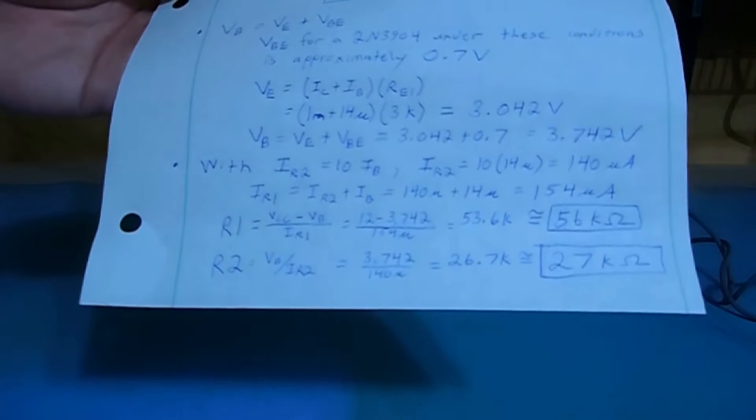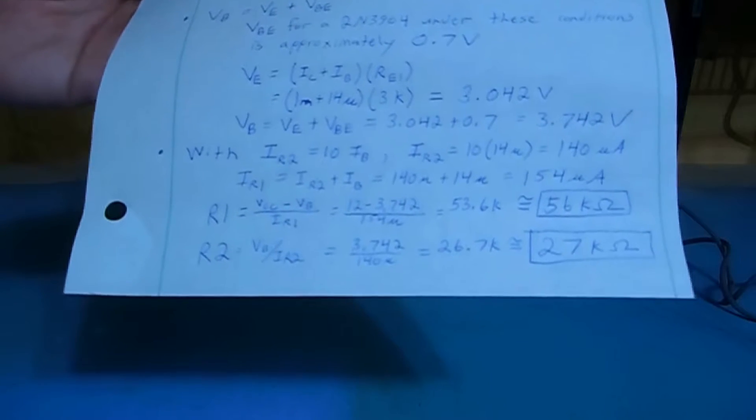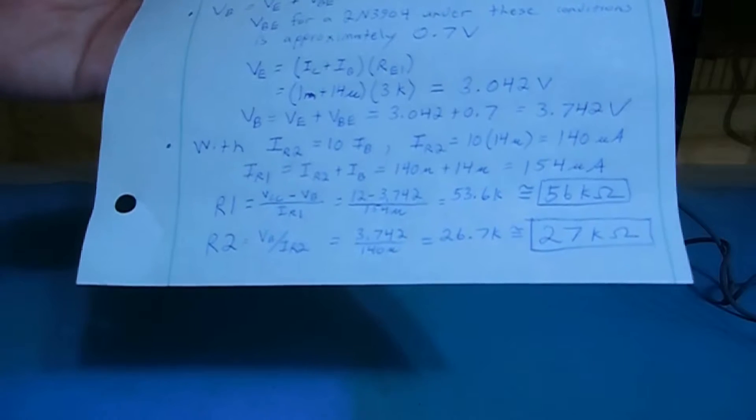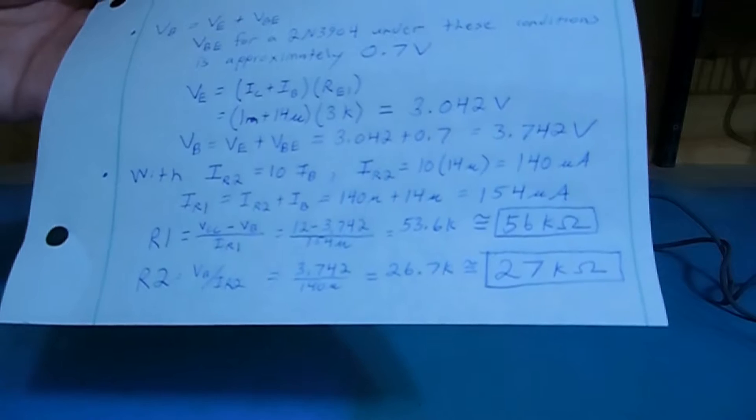For the lower resistor R2, we take that 3.7 volts, which is between the resistor terminal and ground, and divide by the 140 microamps which we have flowing through it, gives us 27,000 ohms for R2.